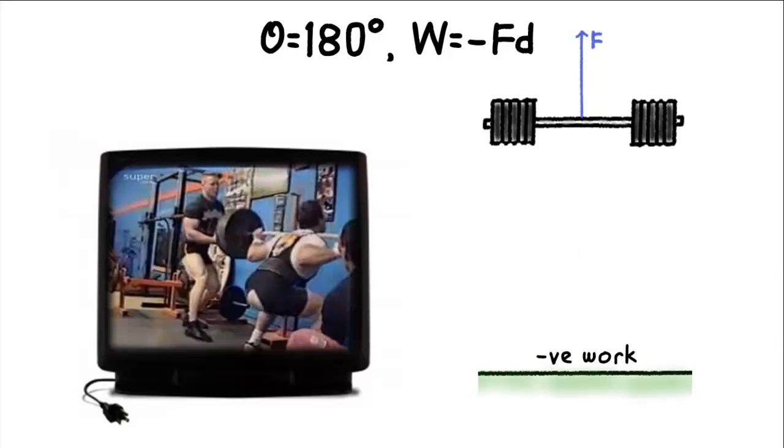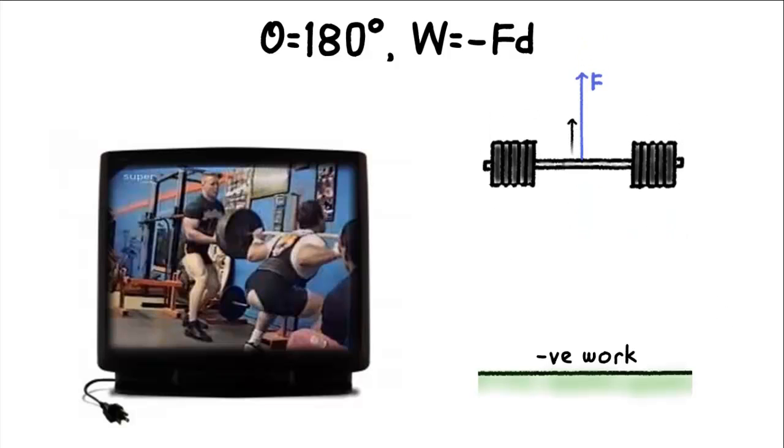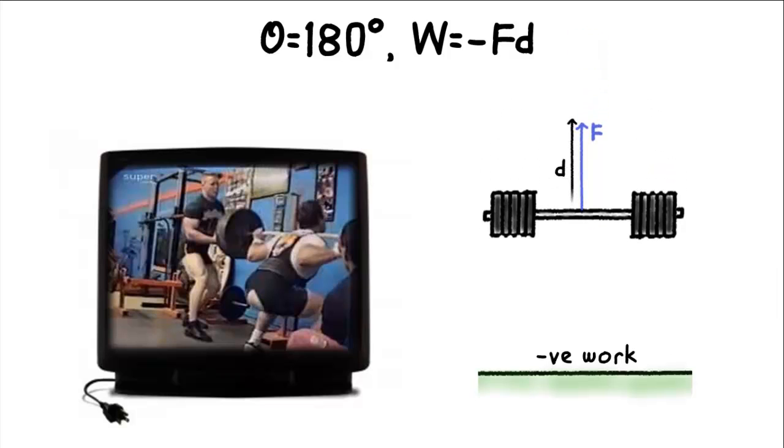In this case, work done is negative, because force and displacement are in opposite directions. This makes sense since the barbell has clearly lost GPE.